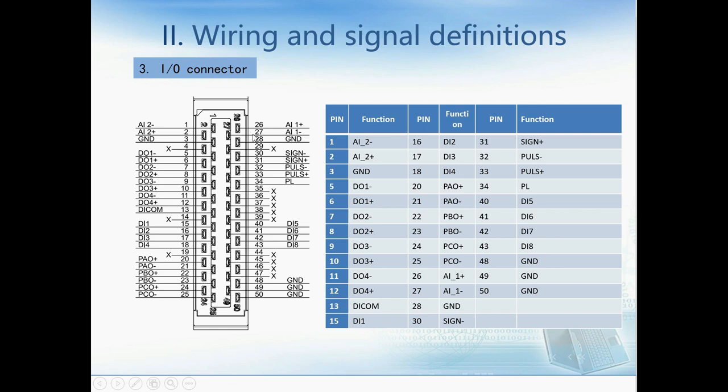Here is the digital output port. This is the signal and pulse port. Generally, these two signals come from the PLC, so we can use the PLC to control the direction and speed of the servo motor. Here is the digital input. And this is PAO, PBO, PCO — the so-called pulse division output. For example, when we input the signal to the servo drive, we can get feedback pulses from PAO, PBO, and PCO.